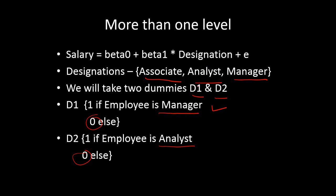Why do we use two dummy variables and not three? If we use two, we don't need the third one — we can still find the relationship among all three categories. Using all three would create computational issues. We only need n−1 dummy variables.